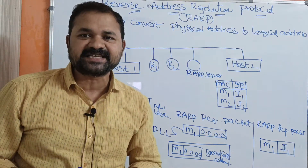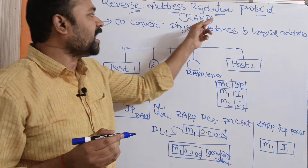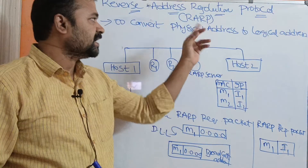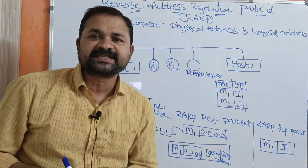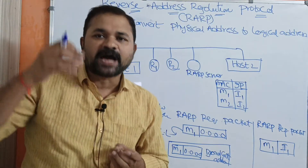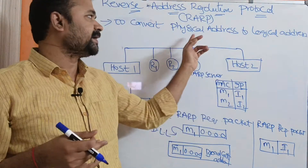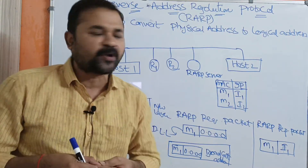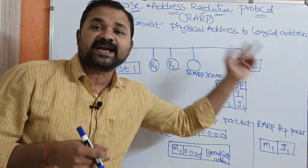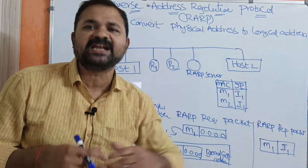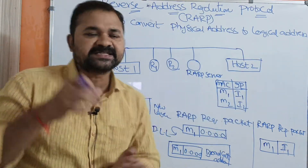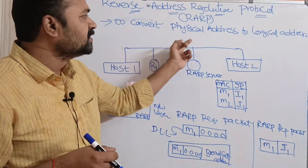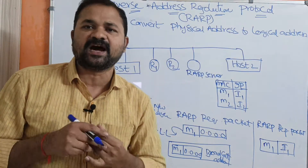Now let us discuss about RARP. RARP stands for Reverse Address Resolution Protocol. It is completely reversed to ARP protocol. We know that ARP protocol converts logical address to physical address, whereas RARP protocol converts physical address to logical address.